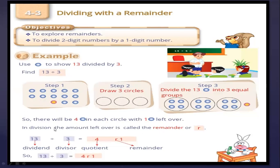In division, the amount left over is called the remainder, or R. So 13 divided by 3 equals 4 remainder 1. Here: 13 is the dividend, 3 is the divisor, 4 is the quotient, and the remainder equals 1.